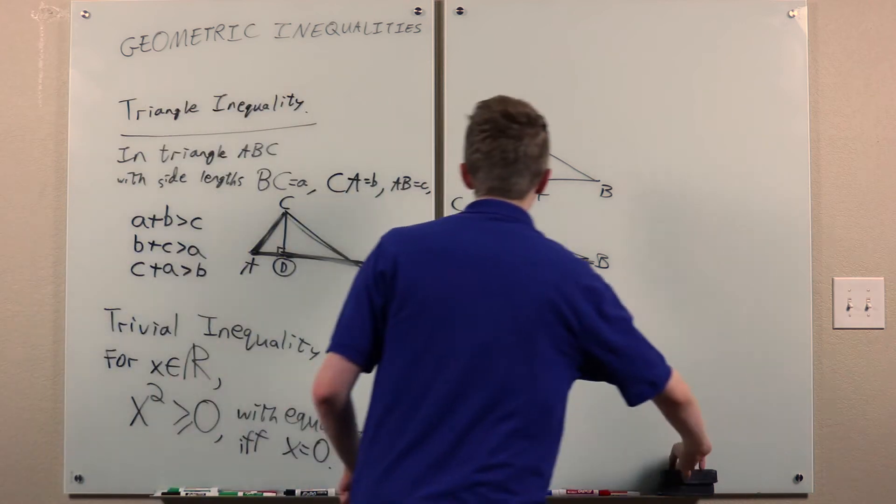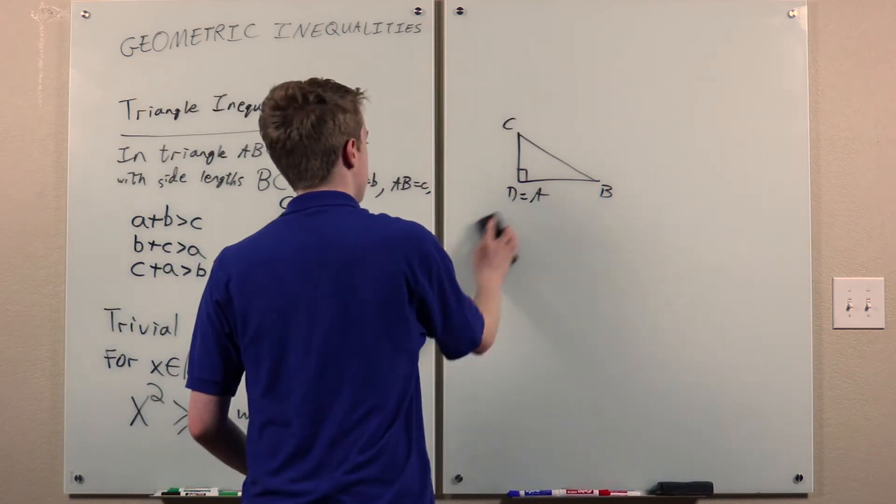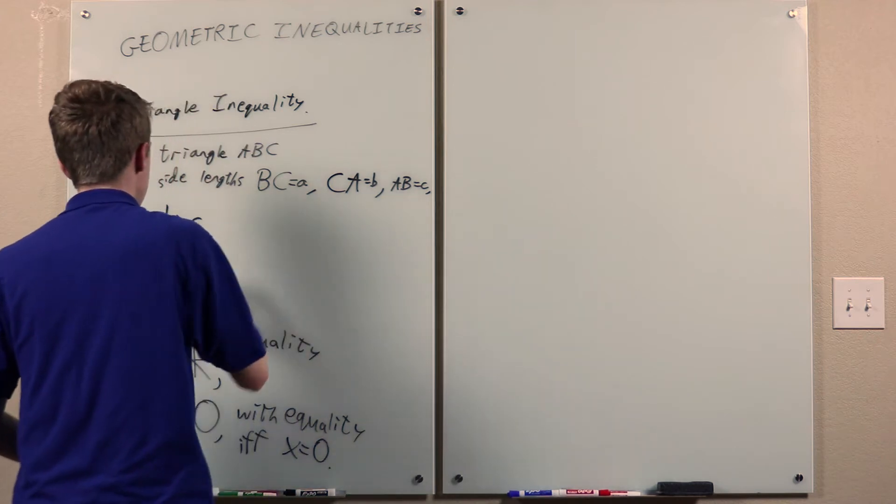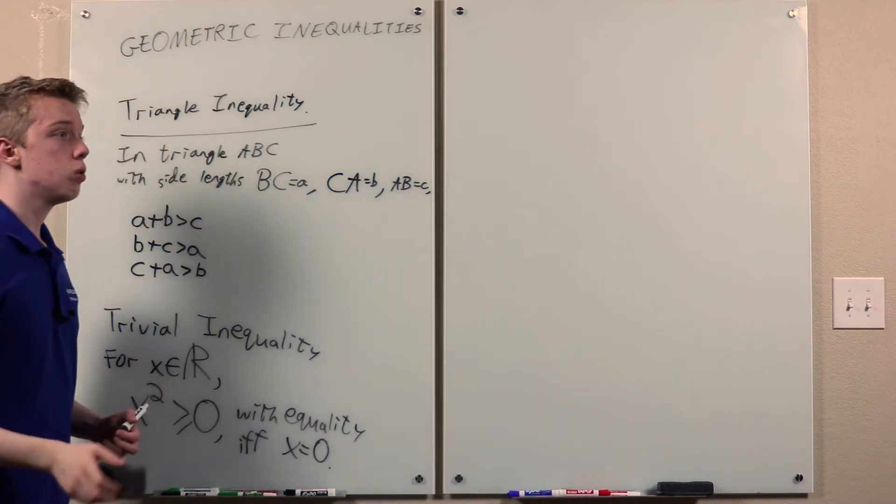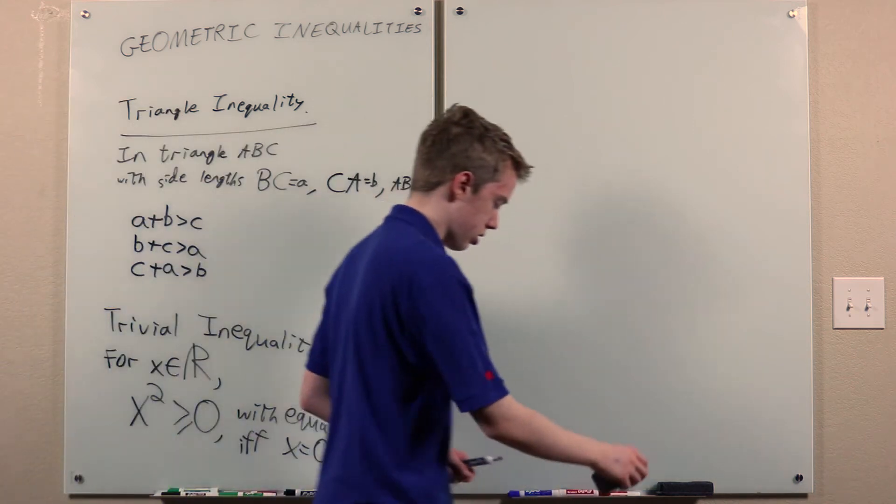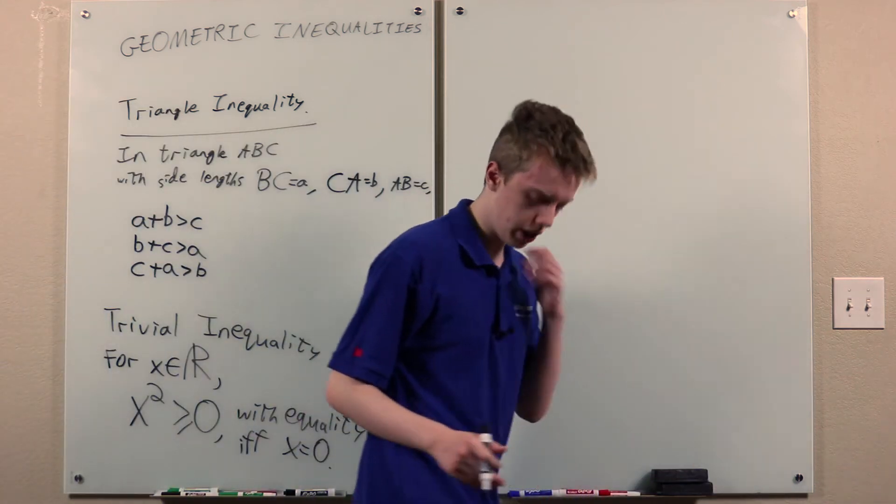And I guess it would be more correct to state it as, for any points A, B and C, AB is greater than or equal to AC + CB, with equality if and only if the point C lies on the segment AB.